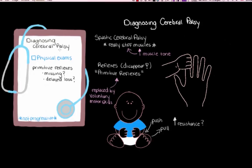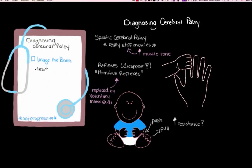At this point, we're considering cerebral palsy as the possible diagnosis. Our next step is to look at the brain using an MRI or ultrasound to see if we can find a lesion — a bit of damage consistent with cerebral palsy. If we find a lesion, this can help confirm the diagnosis. It can also help us figure out exactly what went wrong and how bad the damage is, which helps us determine what sort of long-term consequences the child might face.